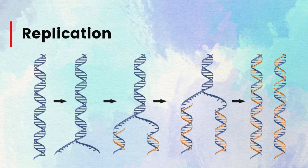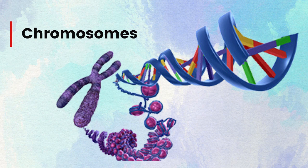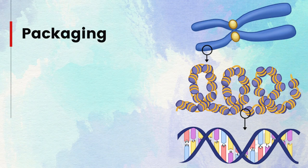DNA can replicate itself, a process crucial for cell division and the transmission of genetic information from one generation to the next. During replication, the two strands of the DNA molecule unwind and serve as templates for the formation of two identical DNA molecules. In eukaryotic organisms — organisms with a cell nucleus — DNA is organized into structures called chromosomes. Each species has a characteristic number of chromosomes, and histone proteins help package the DNA into a structure known as chromatin, which can further condense into chromosomes during cell division.